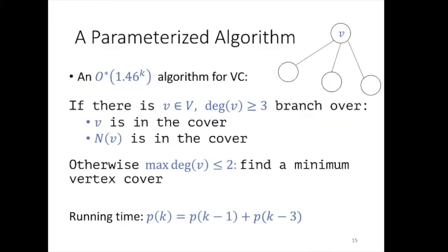Our main idea is to take a very simple algorithm for vertex cover and convert it into a randomized branching algorithm. The base algorithm has a running time of 1.46 to the power of k — it's a textbook algorithm. It works as follows: if the graph has a vertex v with at least three neighbors, we branch over two options: either v is in the cover, or the neighbors of v are in the cover. Otherwise, the maximum degree is at most 2 and we can find an optimal vertex cover in polynomial time. The running time is dominated by the recurrence p(k) = p(k-1) + p(k-3).